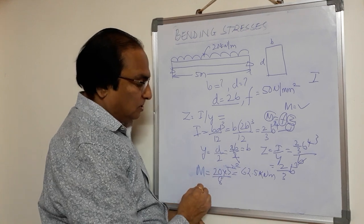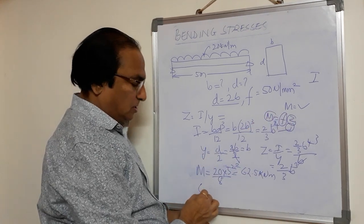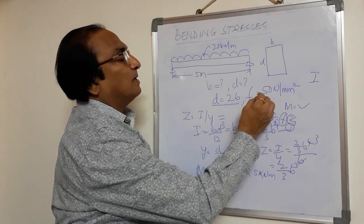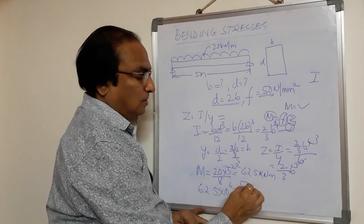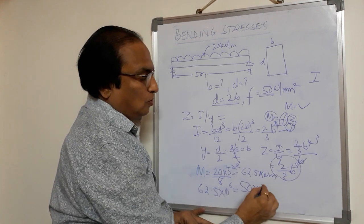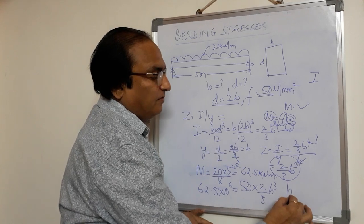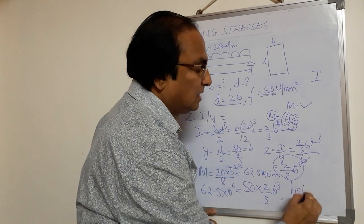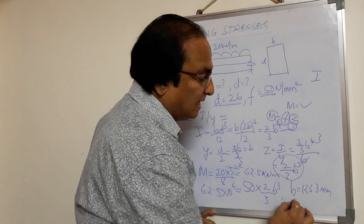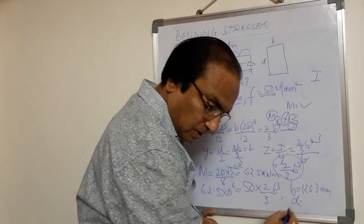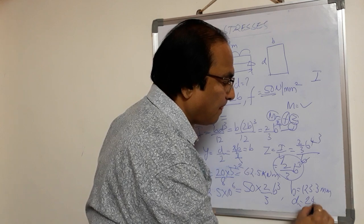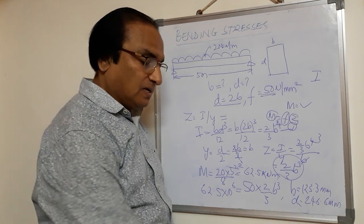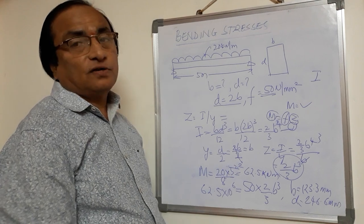Using M = F × Z: 62.5 × 10⁶ = 50 × (2/3) × B³. Solving for B, you get B = 123.3 mm and D = 2B = 246.6 mm. This is another type of problem where bending stress is given and you are finding out the cross section of the beam.